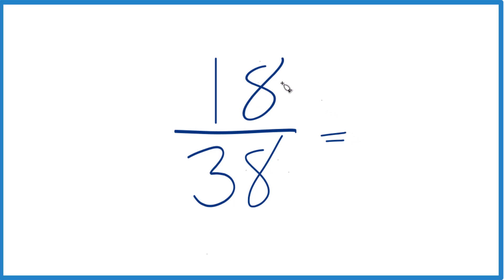And if I divide 18 by 2, that gives me 9. If I divide 38 by 2, I get 19. So you could do it pretty quick that way. You get 9 19ths.